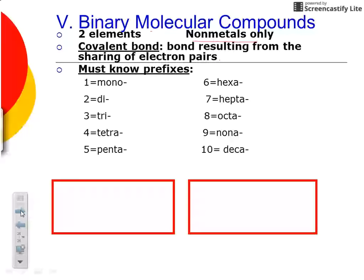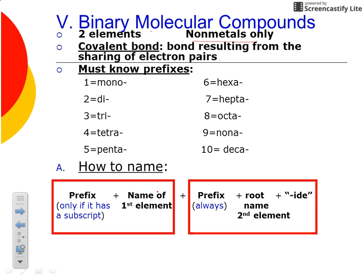Here is the pattern we use to name our binary molecular compounds. For the first element, you use a prefix only if there's a subscript — meaning more than one atom. Then you simply name that element in full without changing anything. For the second element, you always use a prefix. Then, similar to binary ionic compounds, you take the root name of the second element and add the ending "-ide".